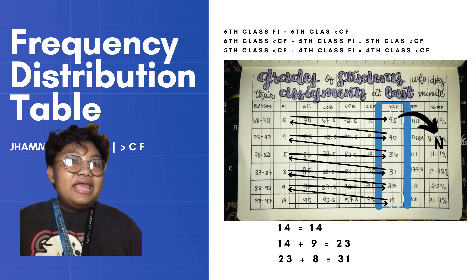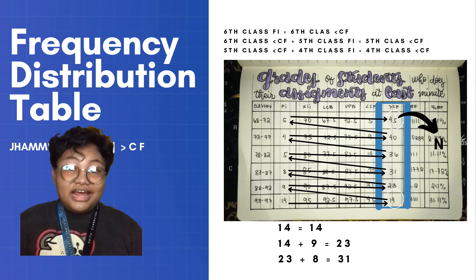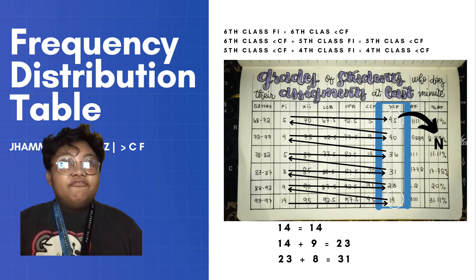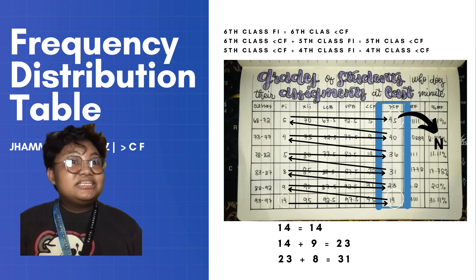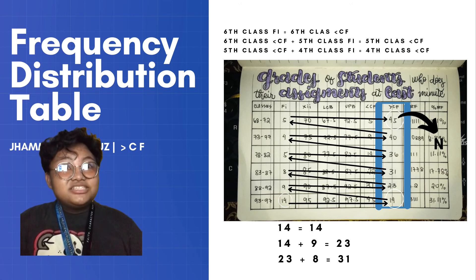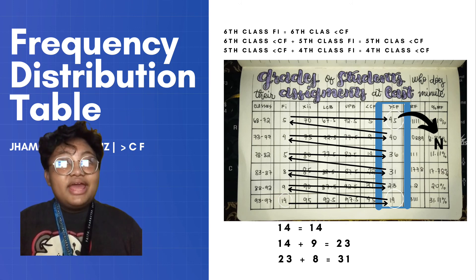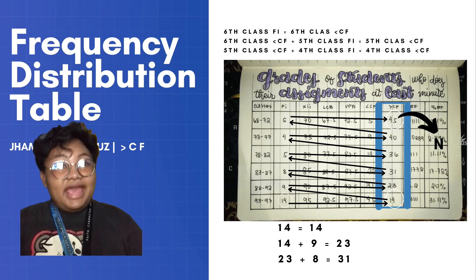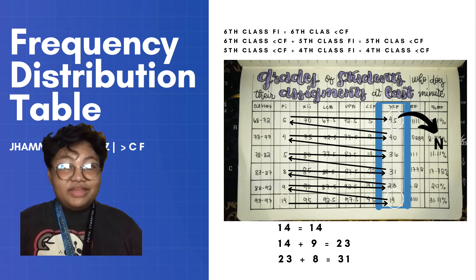Here is a trivia about less than cumulative frequency and greater than cumulative frequency: to check if both your cumulative frequencies are correct, the last cumulative frequency you solve should end up being equal to the data's N, or the total number of data.